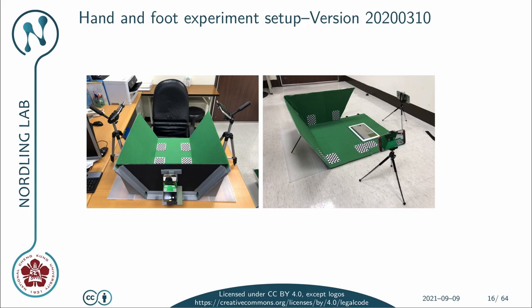We need to ensure we collect data of such quality that we can use it for assessing and developing all kinds of algorithms. Here on the left you can see the first iteration of our box for recording hand movements. We have three cameras placed from three different directions, and we also have some chessboards here for position references for doing stereo calibration. Here we have the box for recording foot movements, with only two cameras in this case.